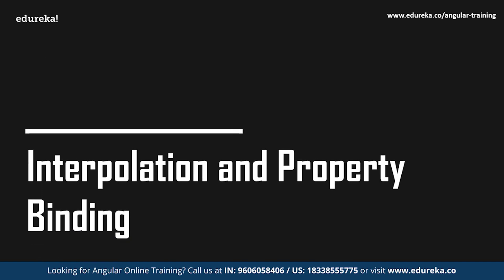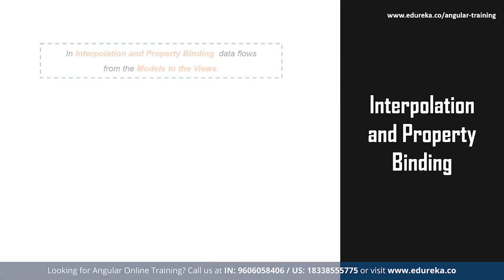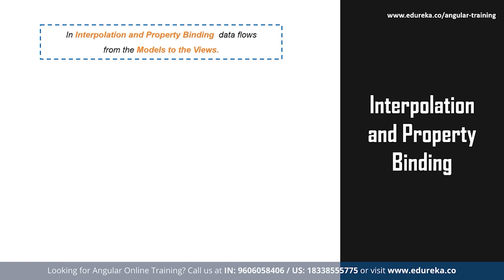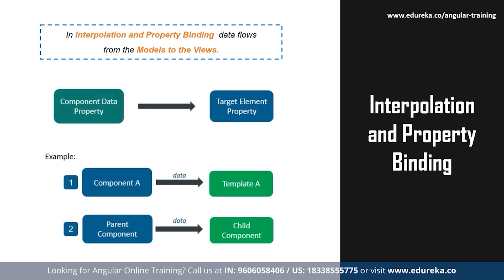In one-way data binding, data flows only in one direction — from the models to the views. As mentioned earlier, one-way data binding in Angular can be of three types: interpolation, property binding, and event binding. Interpolation binding is used to return HTML output from TypeScript code — that is, from the components to the views. The template expression is specified within double curly braces. Through interpolation, strings can be added into text between HTML element tags and within attribute assignments, calculated using template expressions.